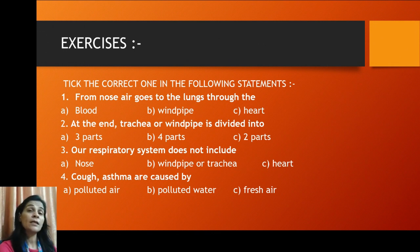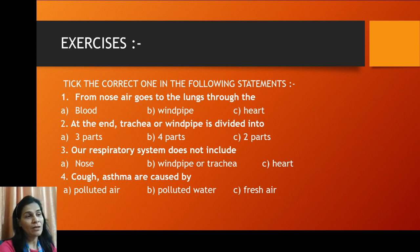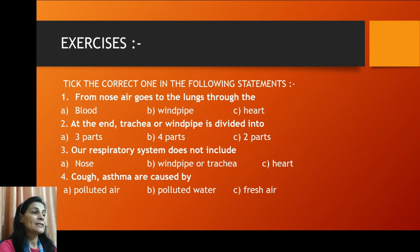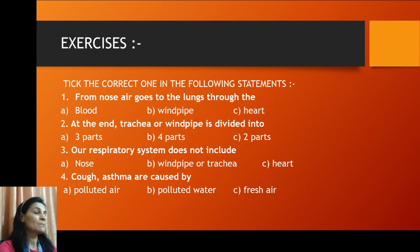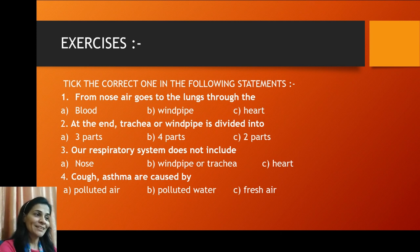Now here are the exercises. Take the correct answer for each statement. First: from the nose, air goes to the lungs through — blood, windpipe, or heart? The correct answer is B, windpipe, which is a tube-like structure. Second: at the end, the trachea or windpipe is divided into how many parts? Two parts. Third: which part does the respiratory system NOT include? C, heart. Fourth: cough and asthma are caused by? A, polluted air.